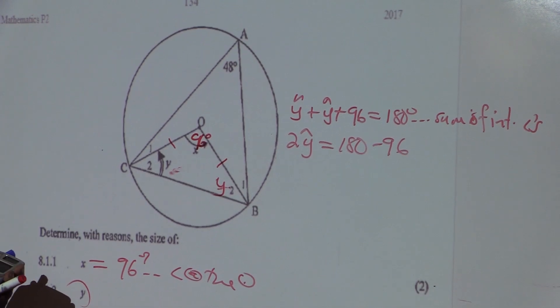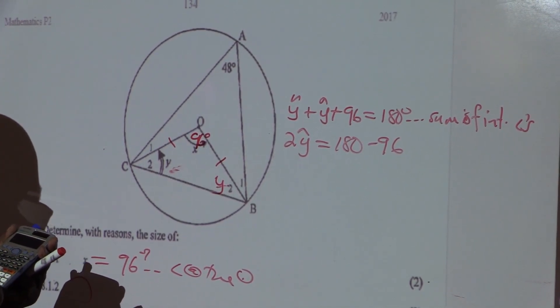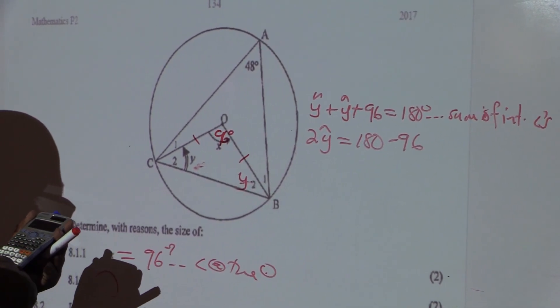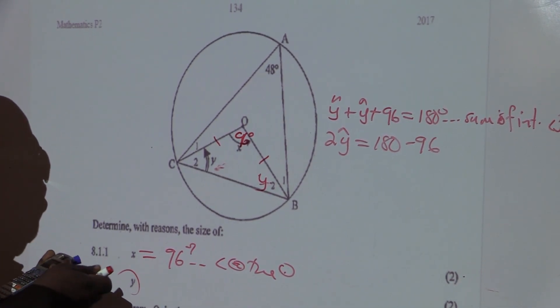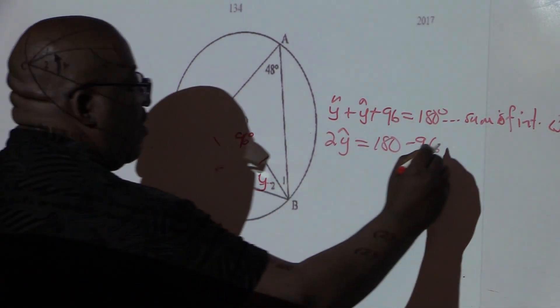What is 180 minus 96? 180 minus 96. It gives me 84. This will give me 84.